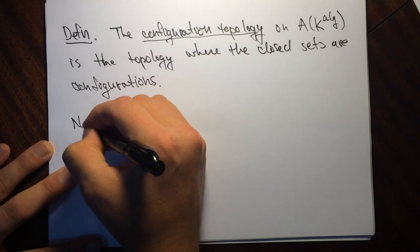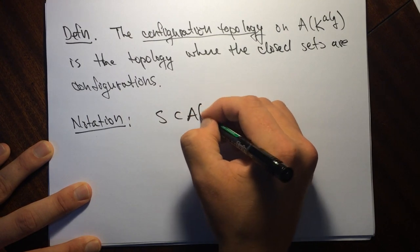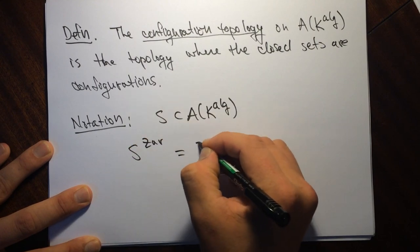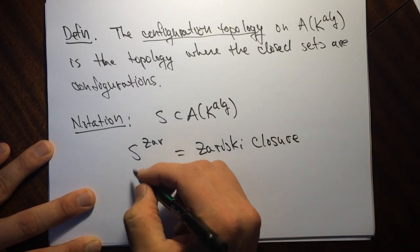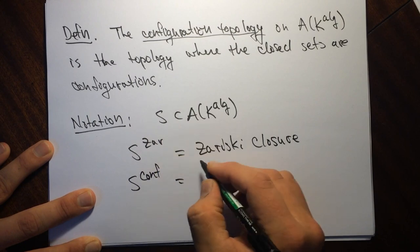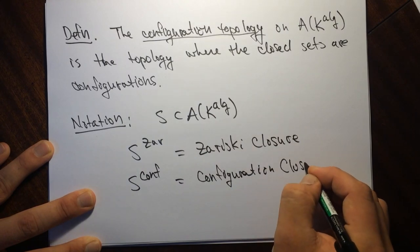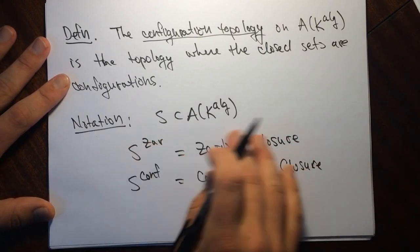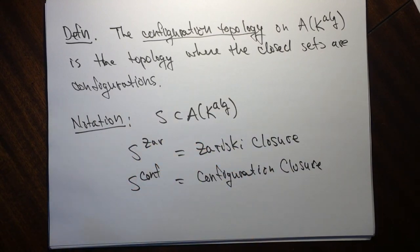Let me introduce some notation. If we take a subset S of the algebraic-closure points of our abelian variety, we'll let the Zariski closure be denoted one way, and the configuration closure another way. I should mention that this presentation is due to Barry Mazur. The Zariski closure is the zero locus of all polynomials vanishing at S, and the configuration closure is the minimal configuration containing the set S.